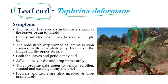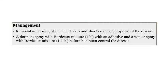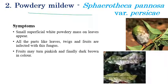In later stages, affected leaves die and drop prematurely. Sometimes flowers and fruits also get infected and drop prematurely. The main symptoms are seen on leaves. For management, removal and burning of infected plants or leaf shoots can reduce the spread. Spraying of Bordeaux mixture 1% and also 1.2% during the dormant stage as well as bud initiation stage can give effective control.